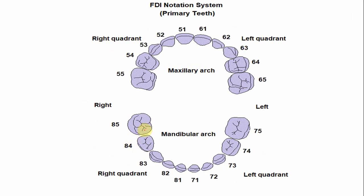In the FDI notation system, which is also called the two-digit system, for the right mandibular deciduous first molar the number is 84 — here 4 is the tooth number while 8 indicates the mandibular right quadrant. Similarly, on the left side the number is 74 — here 4 is the tooth number while 7 indicates the mandibular left quadrant. So, 74 for the left mandibular first molar and 84 for the right mandibular deciduous first molar.